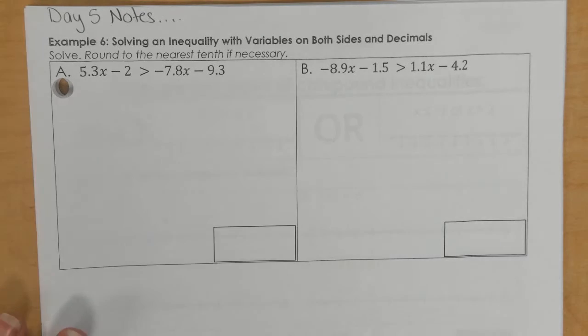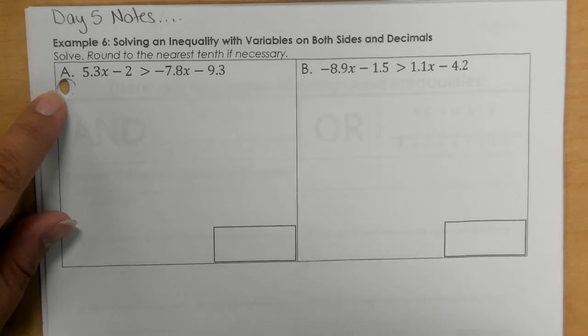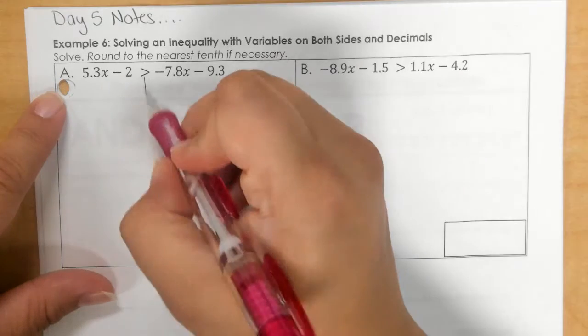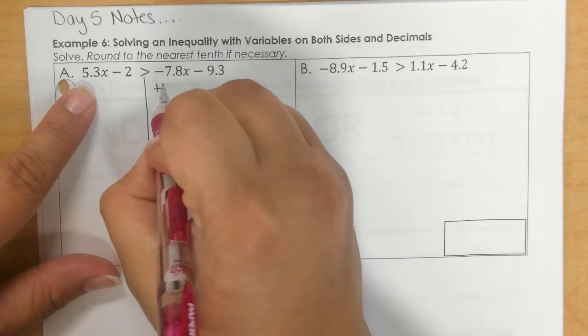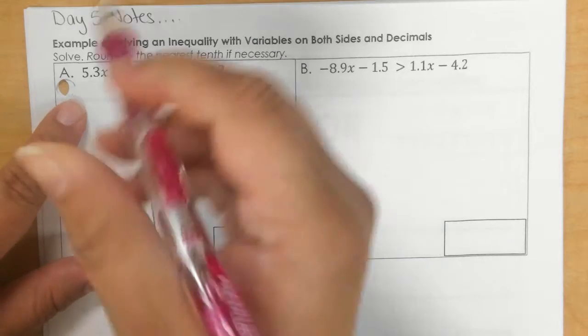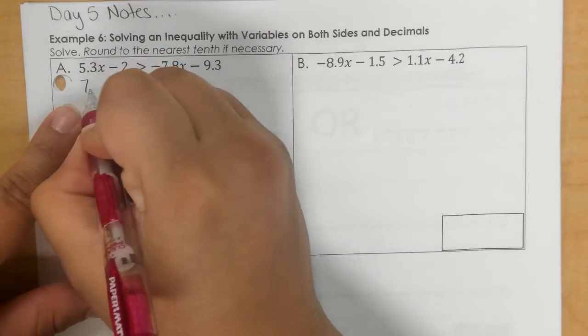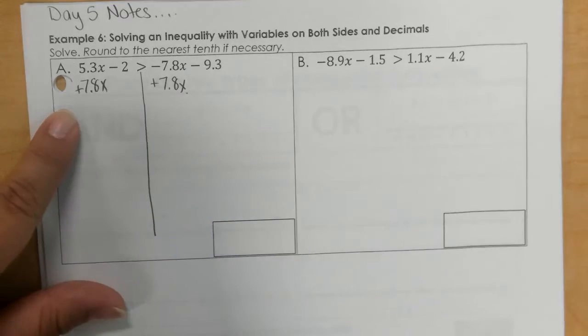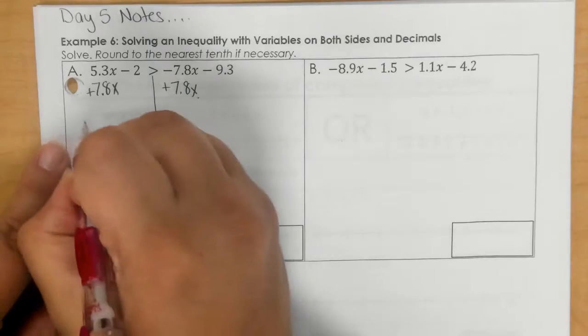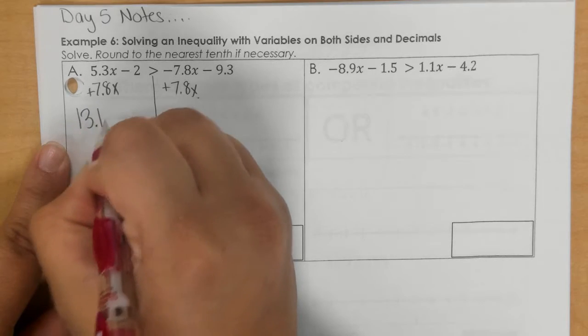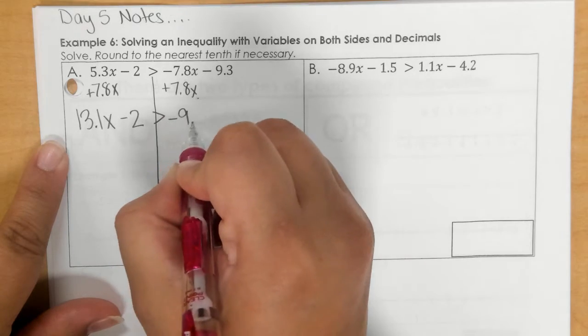So in the last example of day 5 notes, it says solve an inequality with variables on both sides. So here, I want my x's together, so I'm going to add the 7.8x.